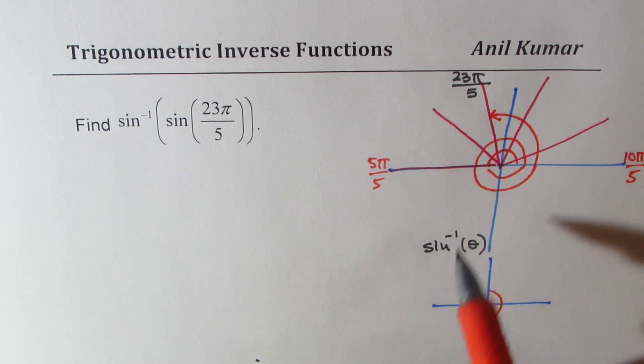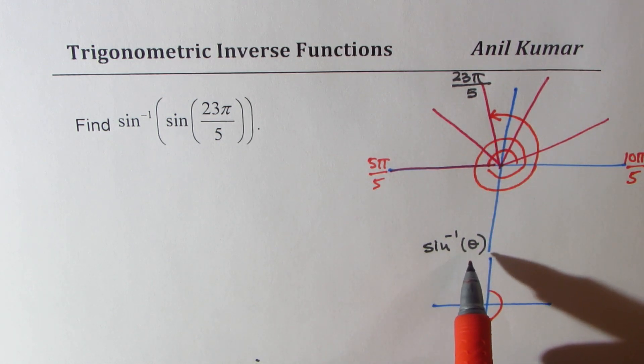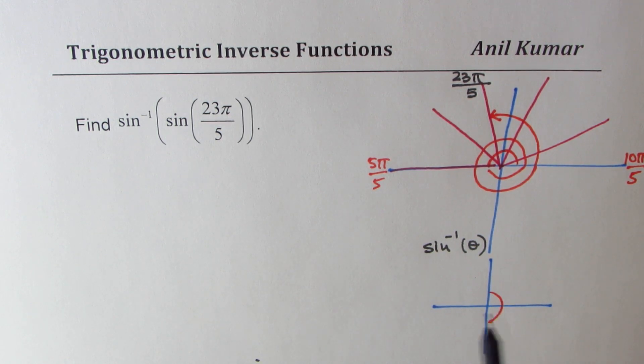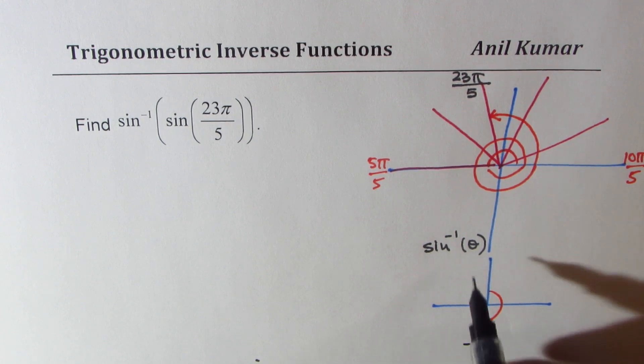So this is out of domain for sine inverse θ. So that's the idea. So you notice that sine inverse θ is valid from minus π by 2 to π by 2.